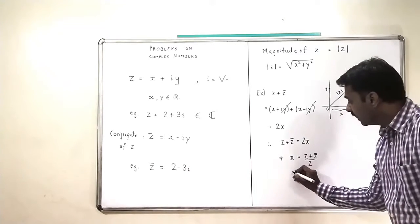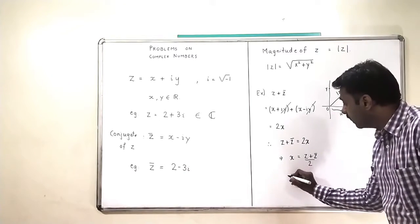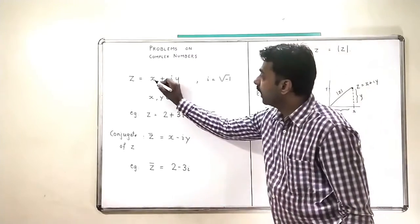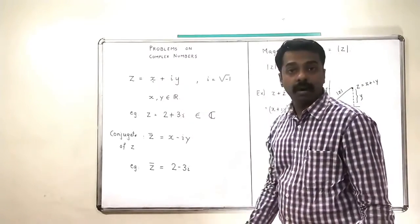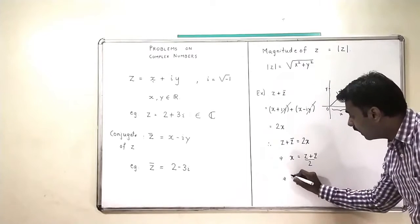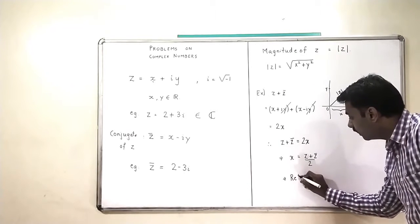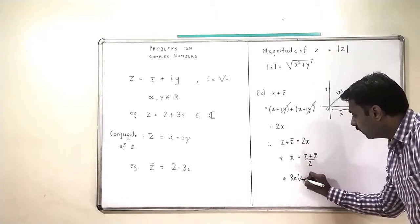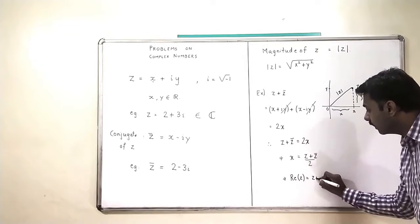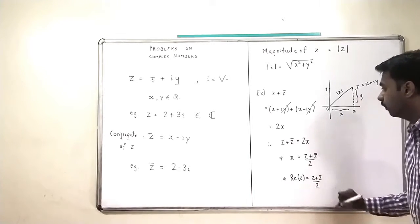What is X? X is the real part of Z. And the real part of Z is given by Z plus Z bar upon 2.